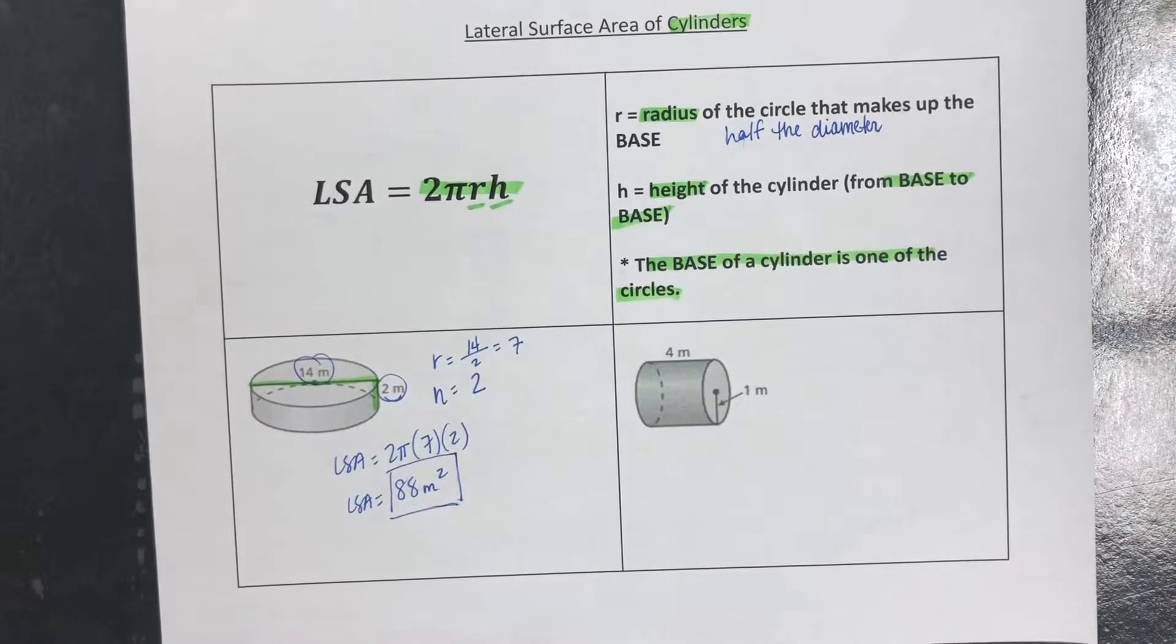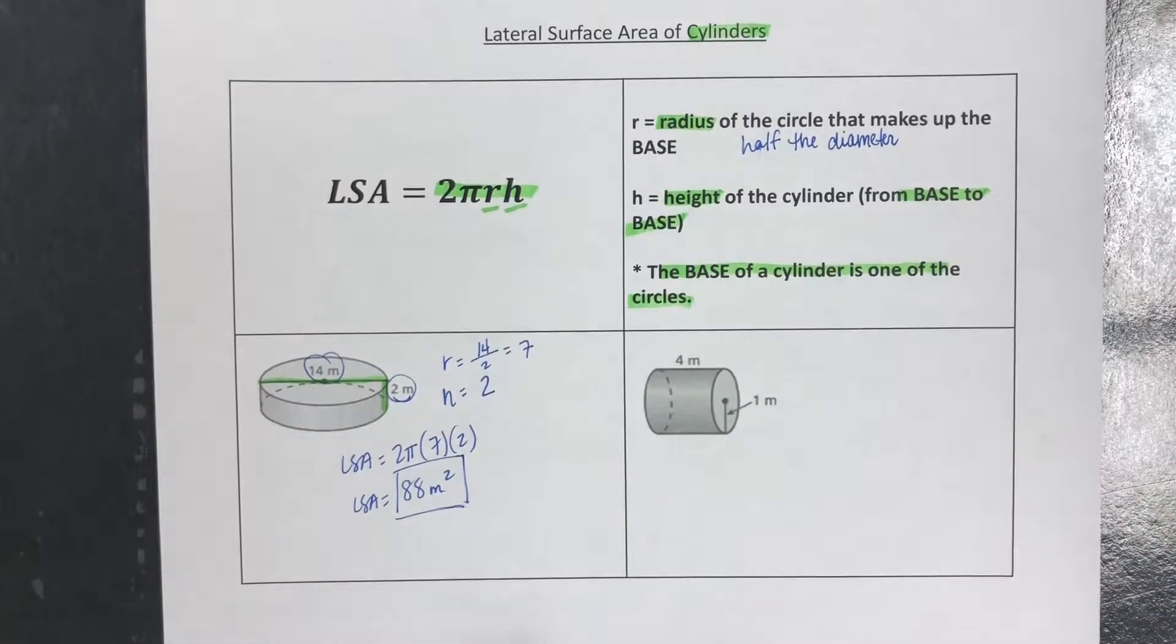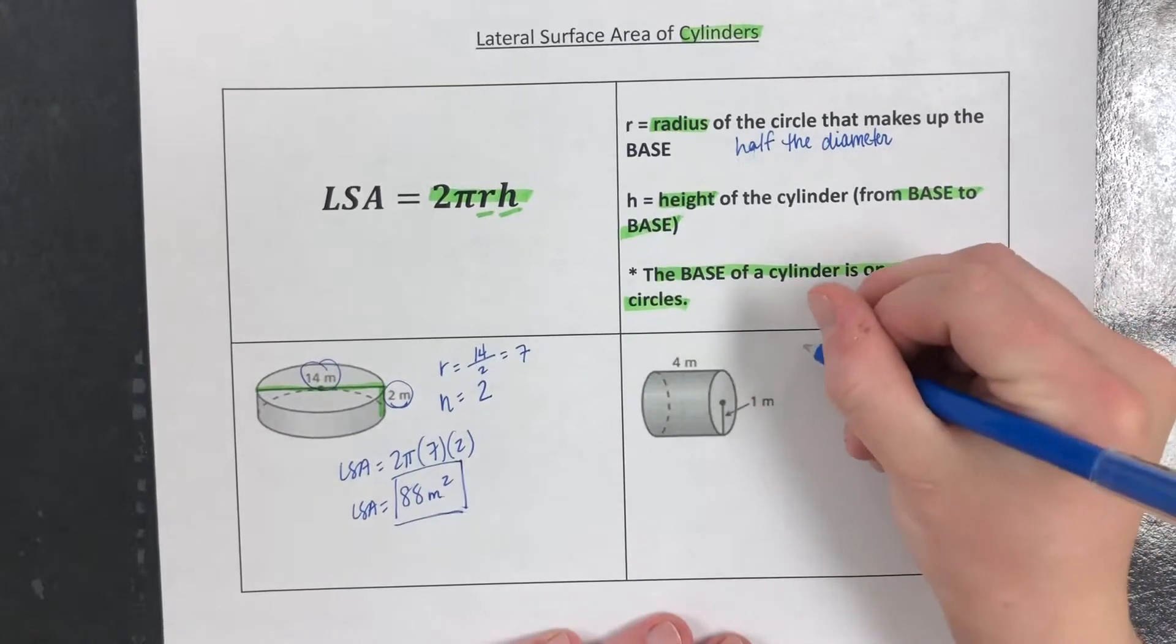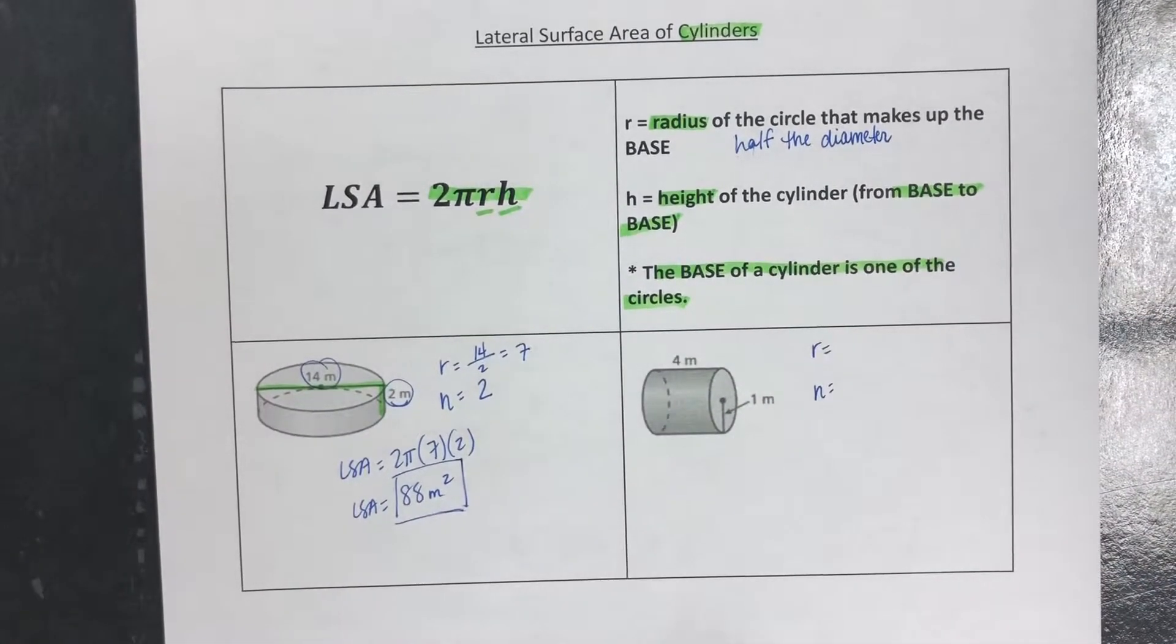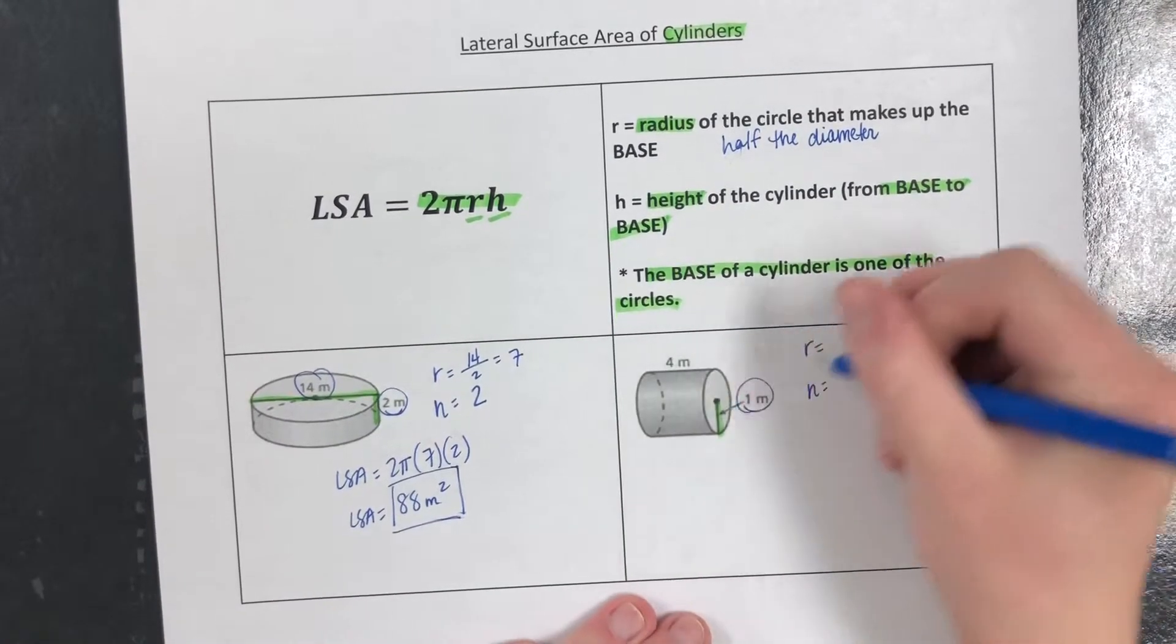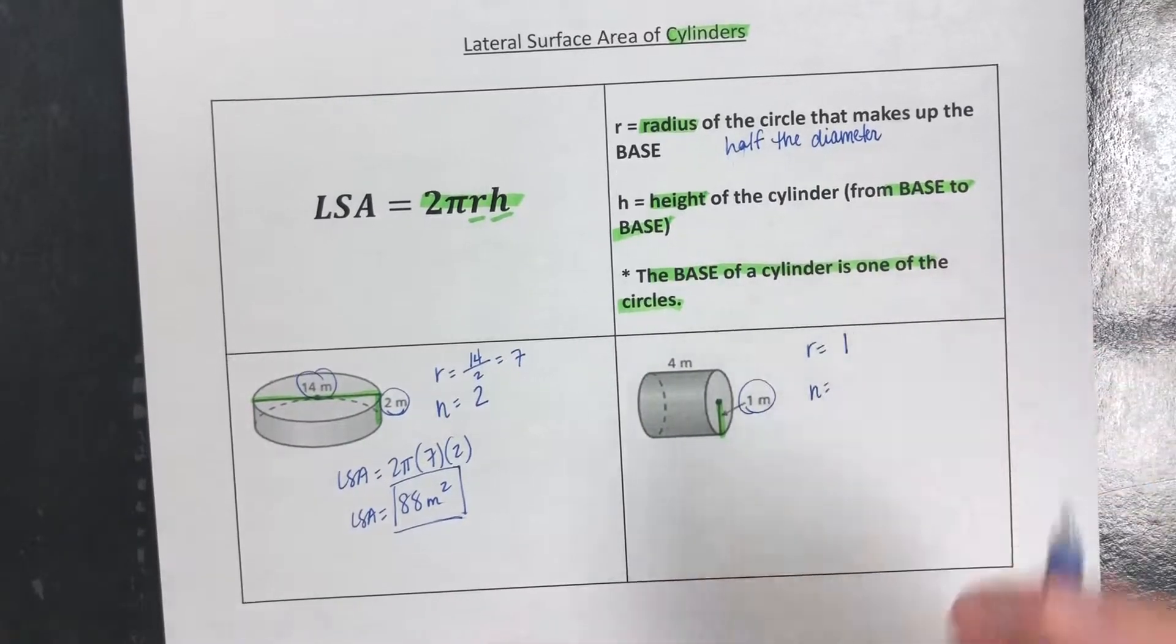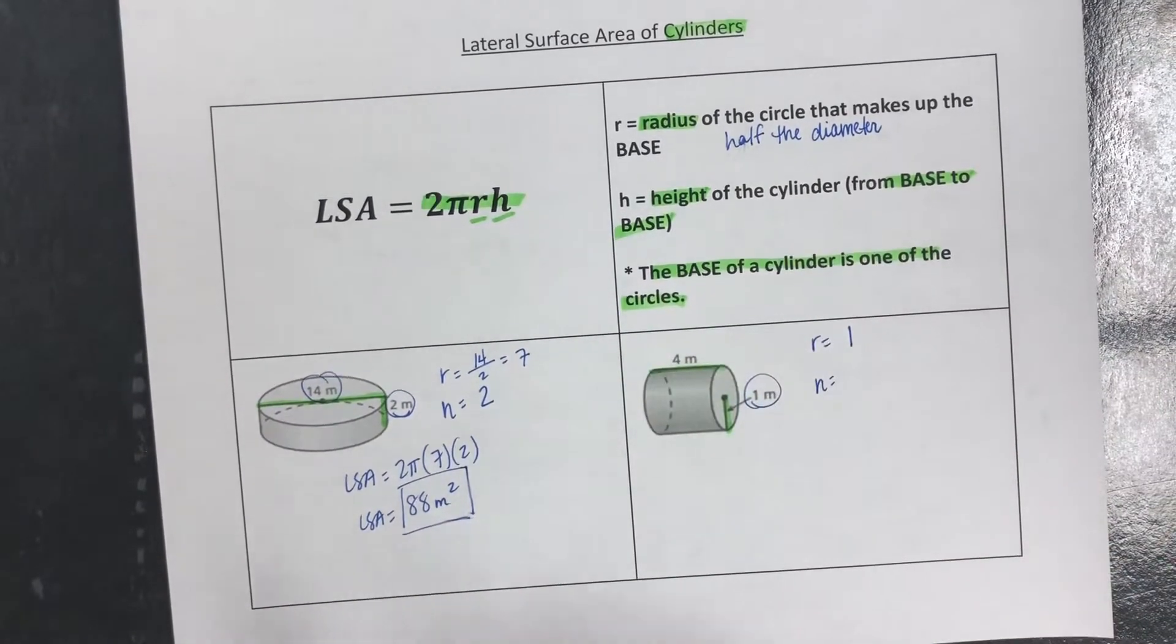Okay, let's do one more. So again we need the radius and we need the height. In this case the radius has been given to us, it is 1, and the height of the cylinder from base to base is 4.